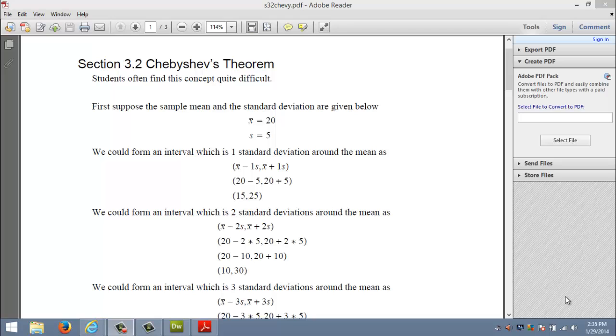Let's see if I can make that make sense. Suppose my data has a mean of 20 that's already been calculated and the standard deviation is 5. What I could do is go to my number line and form an interval where the center of the interval is 20.